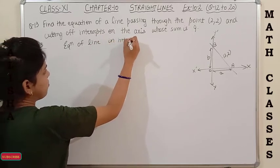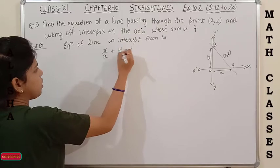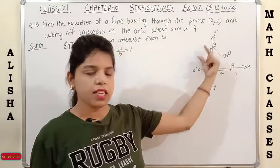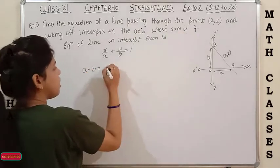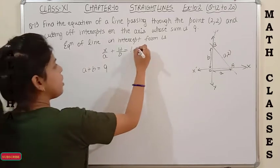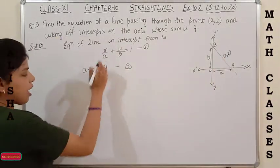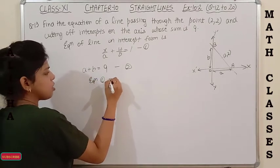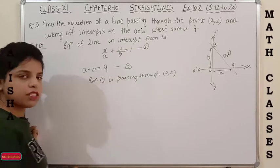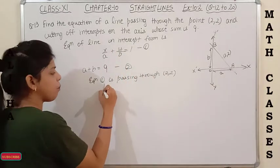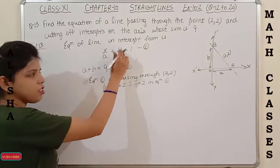Equation of line in intercept form: x/a + y/b = 1, where a is the x-intercept and b is the y-intercept. Given: a + b = 9 — mark this equation 2. Since the line passes through (2, 2), put x = 2 and y = 2 in equation 1: 2/a + 2/b = 1.